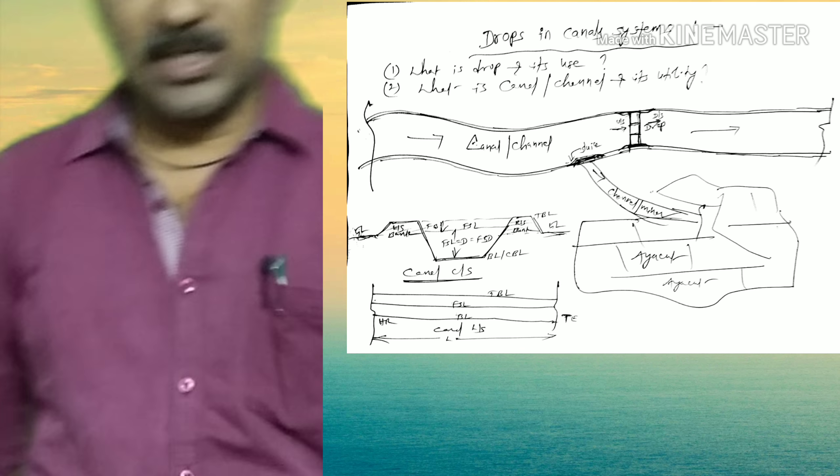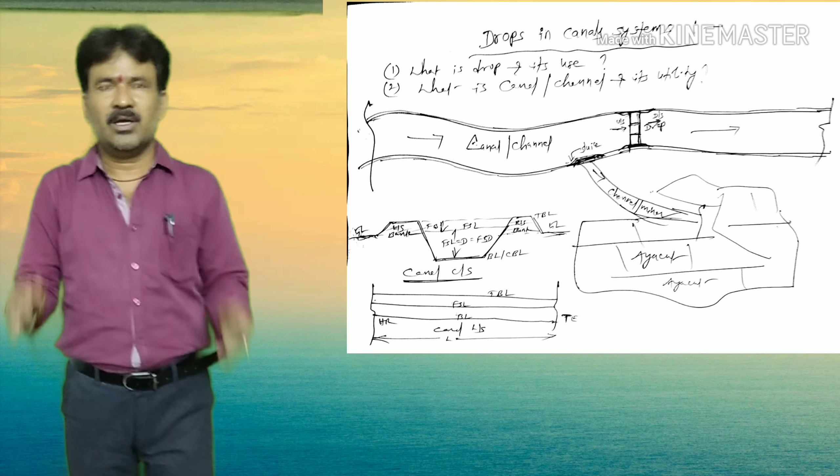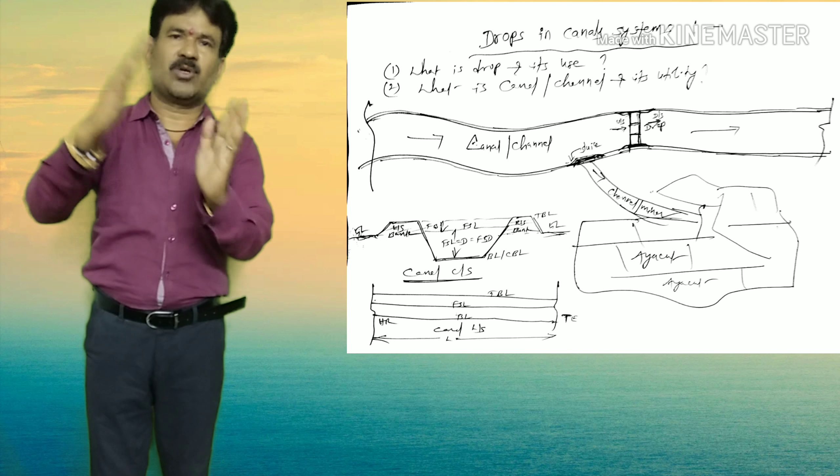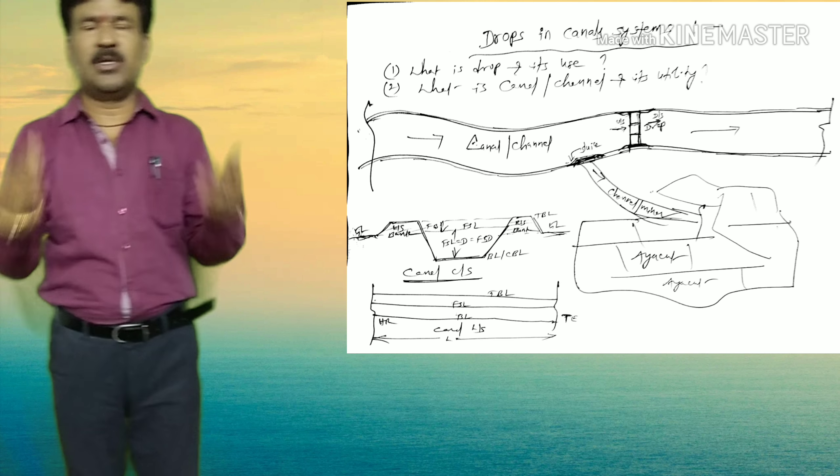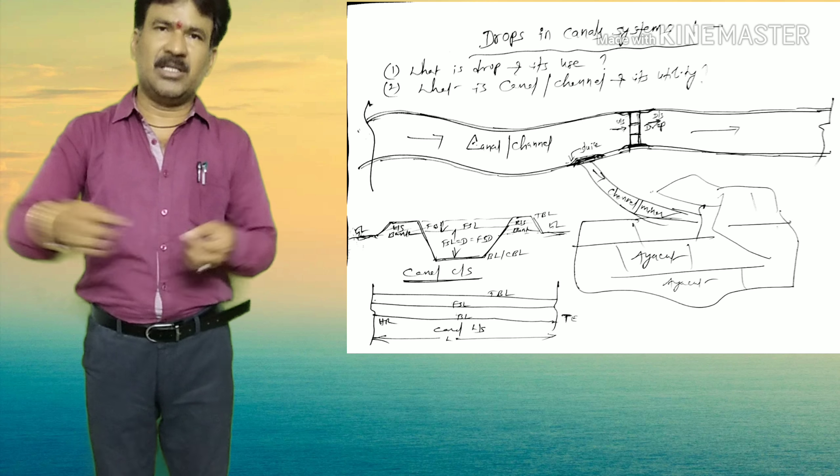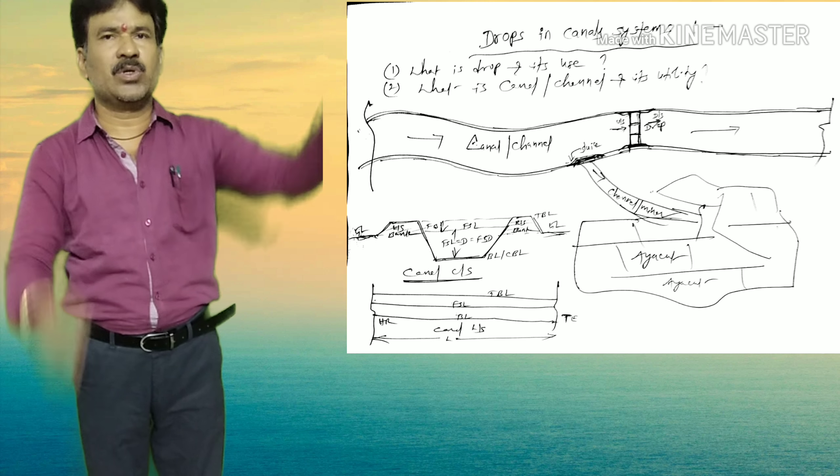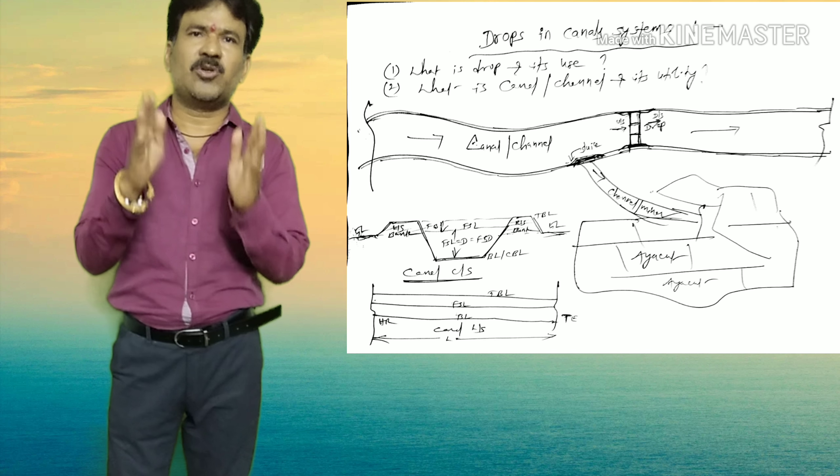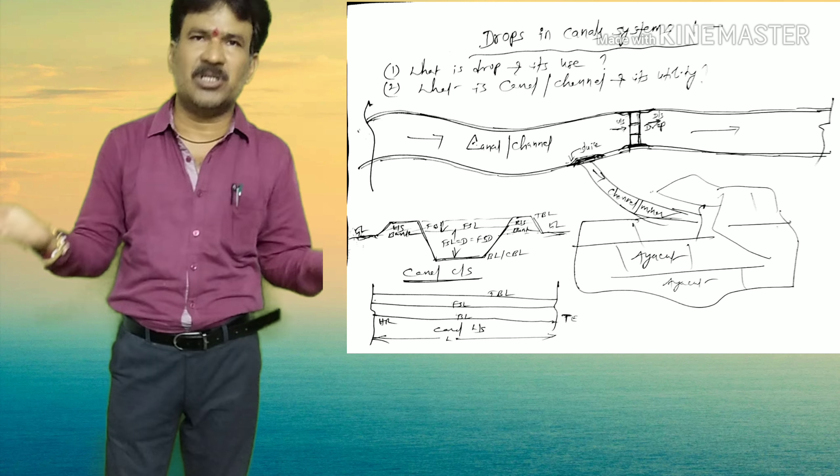This is one, and secondly, where there is steep slope, you have to construct drops, may be two drops, three drops, five drops, depending on the distance and slope. And where there is erosion of the system, there also you have to construct a drop, propose a drop.